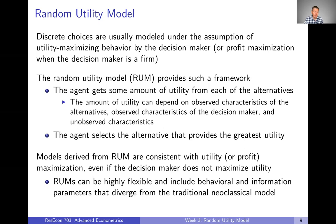The basic idea is that we set it up so that the agent gets some amount of utility from each of the alternatives, and that amount of utility can depend on observed characteristics of the different alternatives, observed characteristics of the decision maker, and also some unobserved characteristics. Then we simply say that the agent selects the alternative that provides the greatest utility, if they're utility maximizing.